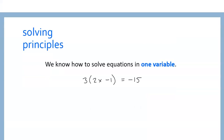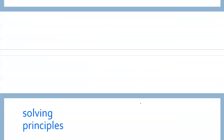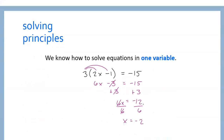Some basic solving principles: we know how to solve equations in one variable. We have an x variable here. We'd probably start with distribution to get rid of the parentheses, and then we do some opposite operations and get x by itself. Step by step, we come out with x equals 2.